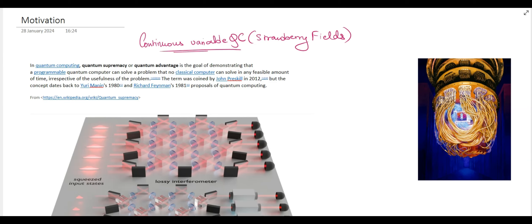To understand why we are going to study this paradigm of quantum computing — which is called continuous variable quantum computing — let us start from understanding what quantum supremacy is, and then I will showcase to you why these systems are important.